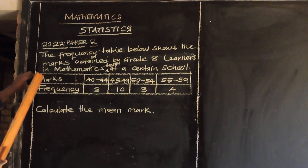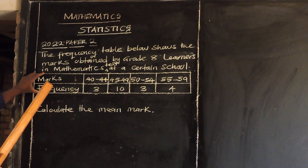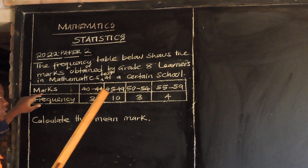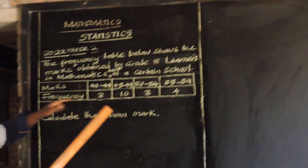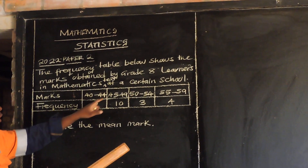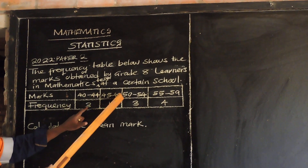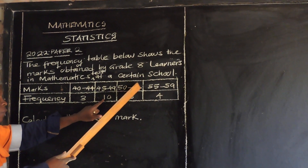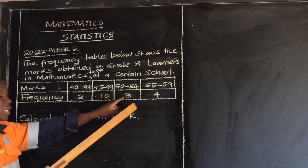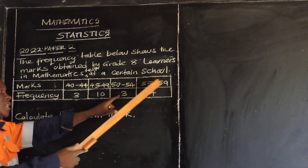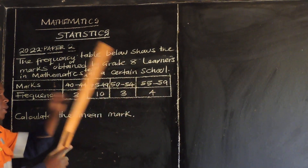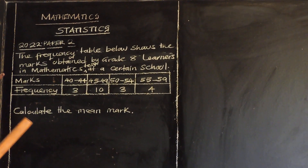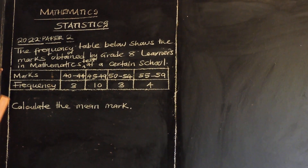So this table has two rows. The first row is showing the range of marks. Those who got 40 to 44 marks were 3, those who got 45 to 49 marks were 10, 50 to 54 marks were 3, then 55 to 59 they were just 4. The question is saying to get the mean mark — they want us to find the mean.